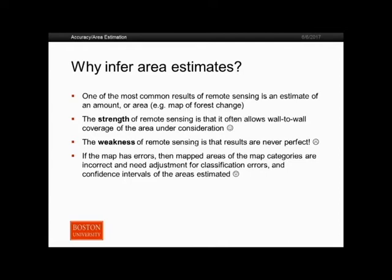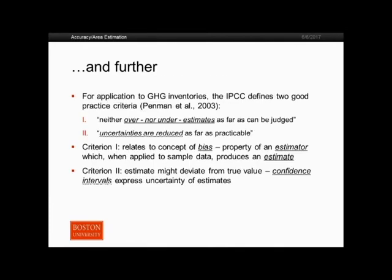What we need to do is implement an estimator that takes those classification errors into account. We do that by applying an estimator to sample data, and we can then also apply a variance estimator to estimate a confidence interval around those areas. Remote sensing results are never perfect. If you have errors in your map, you can't just count the pixels mapped as a certain category — so we need to obtain a sample, apply an estimator, and estimate the confidence interval around the estimates.